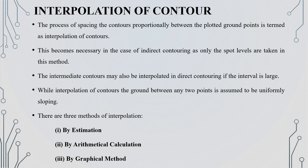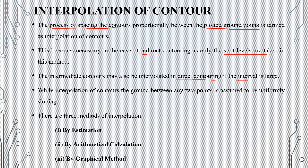Next, interpolation of contours. The process of spacing the contours proportionally between the plotted ground points is termed as interpolation of contours. This is necessary for indirect contouring because we have spot levels. For direct contouring, if the intervals are large, we use interpolation for intermediate contours. When interpolating contours, we assume the ground is uniformly sloped.